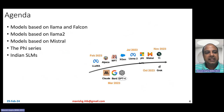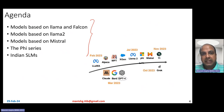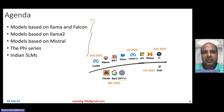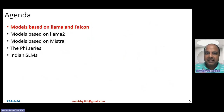Here is the agenda. I'll be talking about models based on LLaMA and Falcon, because LLaMA was the first model that became publicly available — especially the 6.7 billion checkpoint — which started the work in this area. Then I'll talk about models based on LLaMA 2, then models based on Mistral, then the Phi series from Microsoft, and finally a discussion on Indian small language models.